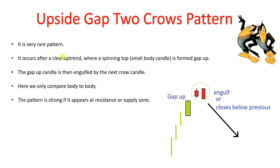So when this pattern occurs, it occurs in a clear uptrend — there would be a clear uptrend. And after that, you will see there would be a spinning top formed. Spinning top means candles with smaller bodies. There can be larger wicks, but the body should be smaller. And that candle will open gap up.